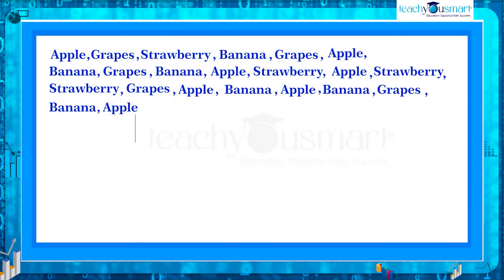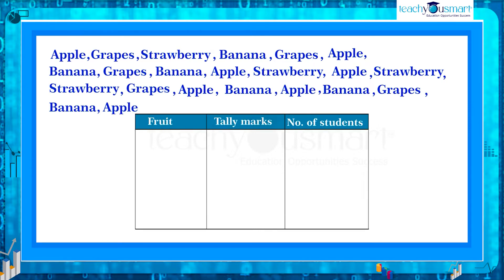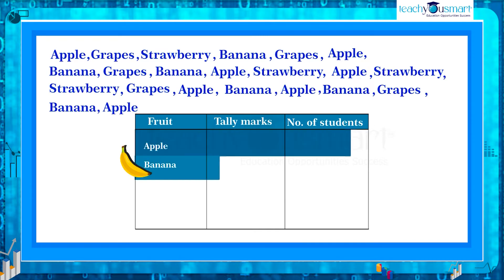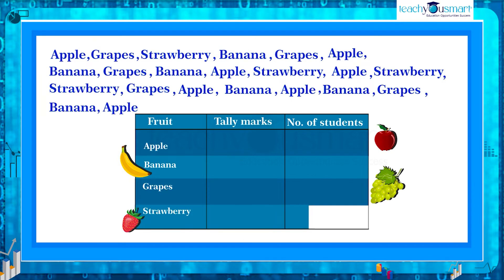We have to arrange the raw data in a table using tally marks. There are four fruits in the given data: apple, banana, grapes, and strawberry.